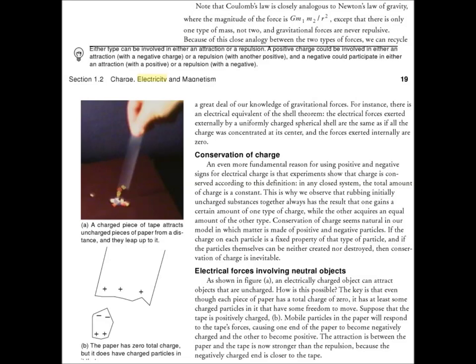Suppose that the tape is positively charged. Mobile particles in the paper will respond to the tape's forces causing one end of the paper to become negatively charged and the other to become positive. The attraction between the paper and the tape is now stronger than the repulsion because the negatively charged end is closer to the tape.